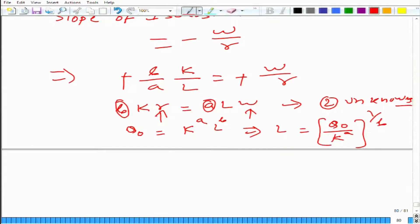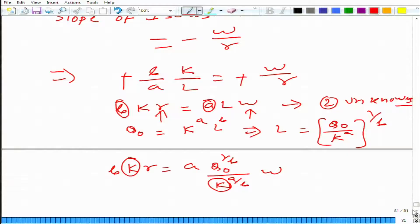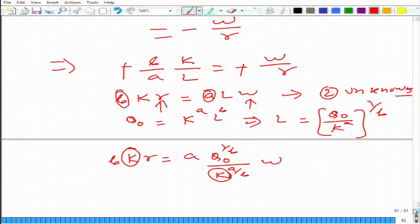If we put it back, b times k times r equals a times l, where l is q naught to the power 1 over b times k to the power a over b times w. In this, we have only one unknown, that is k, and we can solve it. What did we use? We used the tangency criteria.